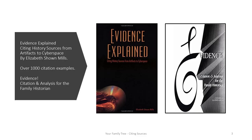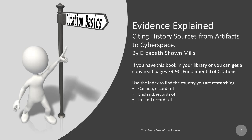Evidence Explained is designed to help genealogists make sense of citations and improve their research. At the end of this video I will provide a link to Evidence Explained with sample text, which you will find most beneficial. There is also Elizabeth Shown Mills' second book, Evidence: Citation and Analysis for the Family Historian, and her book Evidence Explained: Citing History Sources from Artifacts to Cyberspace. If you have this book, read pages 39 to 90 — that's citation basics and fundamentals of citations.